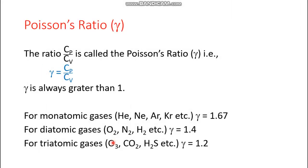Now the last topic of this lecture is Poisson's ratio, denoted as γ, which is the ratio of Cp to Cv. Since Cp involves mechanical work, it is always greater than Cv. We know that Cp − Cv = R, the gas constant, so the difference is always constant. However, their ratio varies according to the atomicity of the gas — whether monatomic, diatomic, or triatomic.